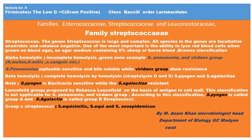Today we start our topic on Firmicutes — low G+C gram-positive bacteria, class Bacilli, order Lactobacillales. In Lactobacillales there are three major families: Enterococcaceae, Streptococcaceae, and Leuconostocaceae. These are very important families. Today we will discuss the family Streptococcaceae.